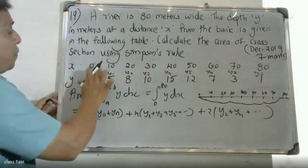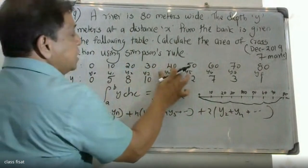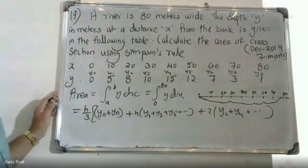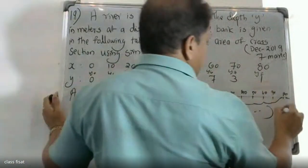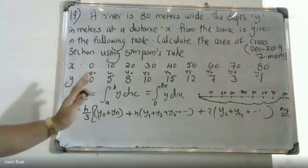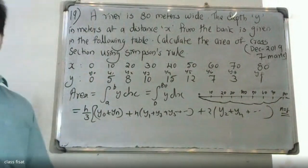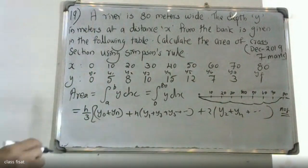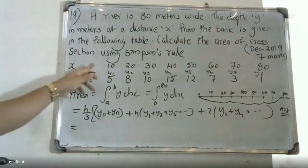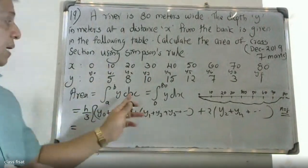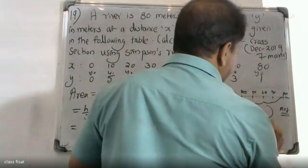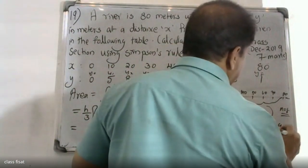The number of intervals is 1, 2, 3, 4, 5, 6, 8 — that is N equals 8, which is an even number. So we can apply Simpson's one-third rule.